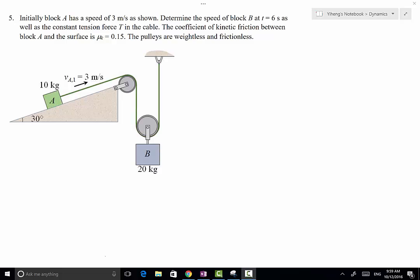In this problem, block A and B are connected through this cable and pulley system. The cable and pulley system is frictionless and weightless. Initially, block A has a speed of 3 meters per second along the incline surface up. There is friction between block A and the surface with a coefficient of kinetic friction of 0.15. We need to determine the speed of block B at t equals 6 seconds, as well as the tension force in the cable. Tension force is constant and is the same everywhere along the cable.